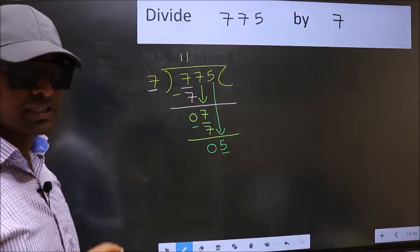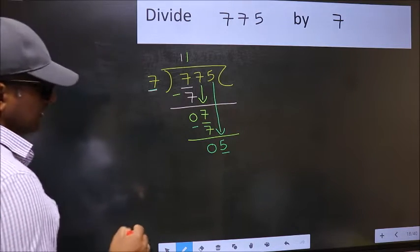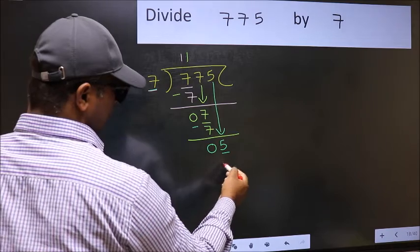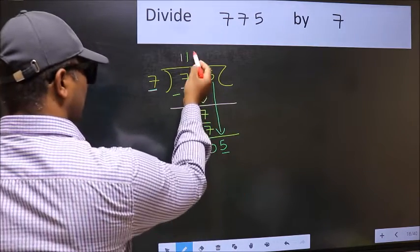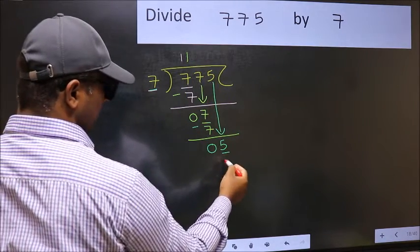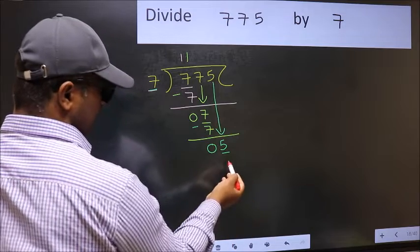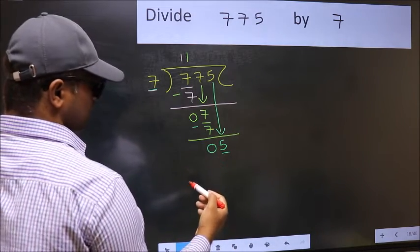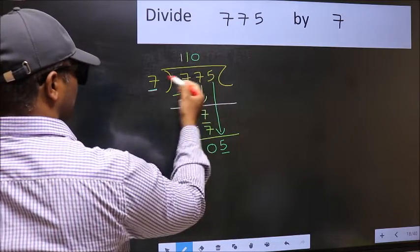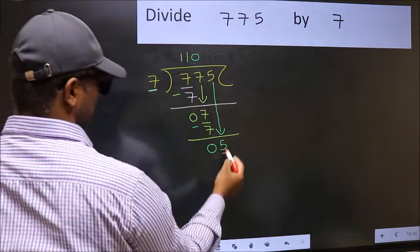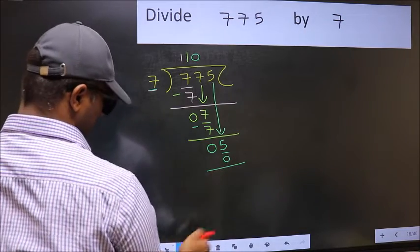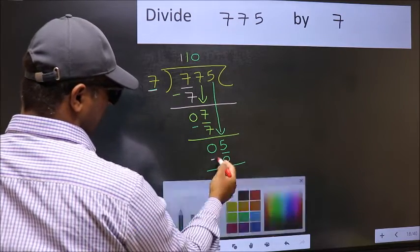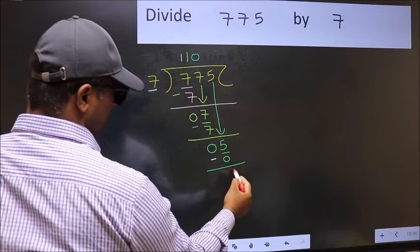Instead, what you should think of doing is, which number should be right here. If I take 1, we will get 7, but 7 is larger than 5. So what we should do is we should take 0. So 7 into 0 is 0. Now you should subtract. 5 minus 0, 5.